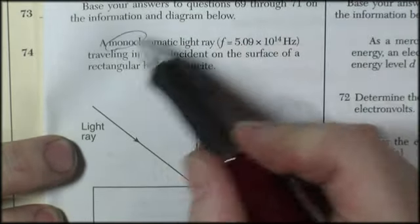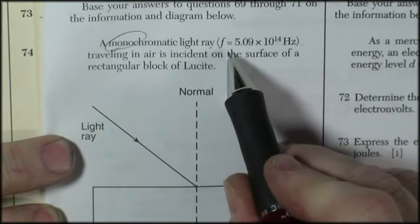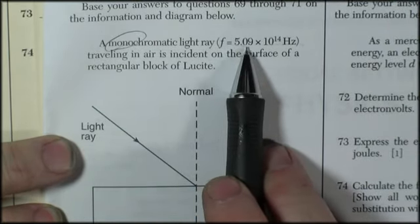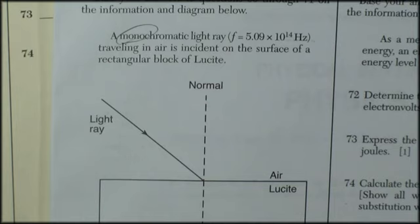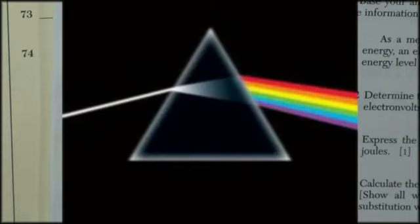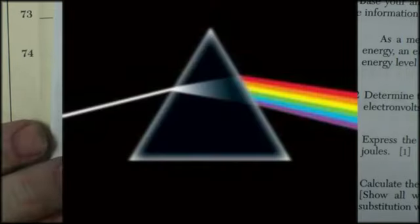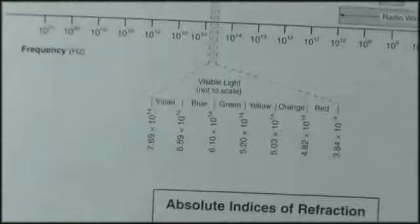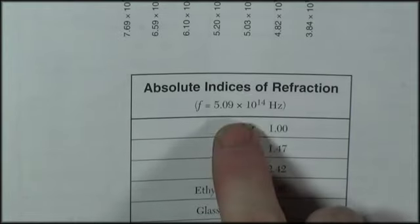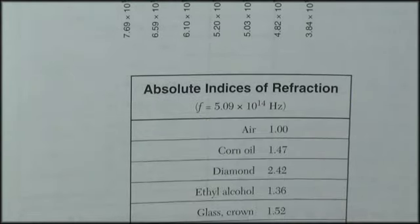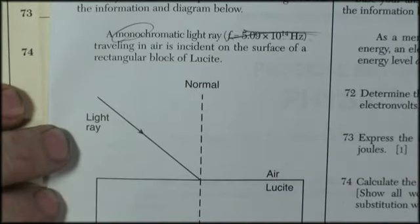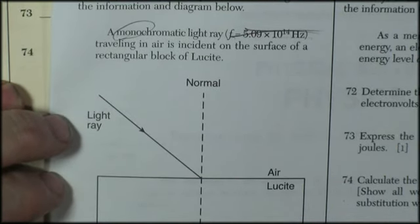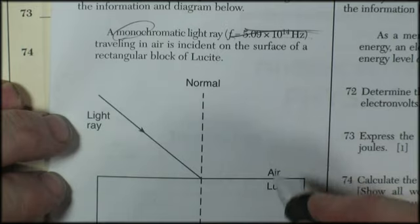Monochromatic light ray, one color, mono-one chromatic color light ray. And they tell you the frequency, and they always tell you this frequency, 5.09 times 10 to the 14 hertz, because your table of indices of refraction is based on that one frequency. Different frequencies of light bend at different amounts. That's how a prism works. So they can't very well give you just any color of light. They have to tell you an exact color of light, because on this table of absolute indices of refraction, it's going to be for that particular color of light. So don't let that mess you up. It's really not germane to the question. It's traveling in air, and it's incident on the surface of a rectangular block of lucite, air and lucite.